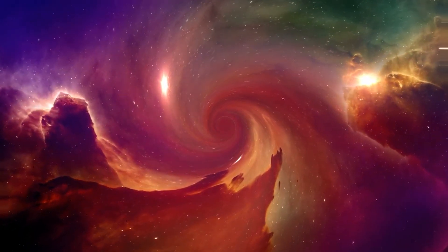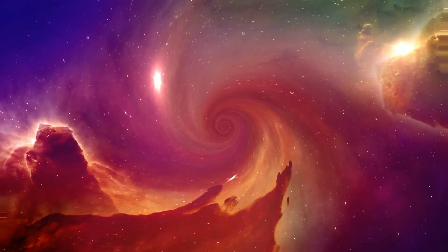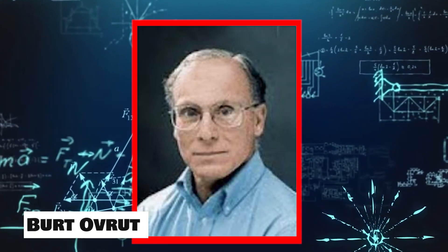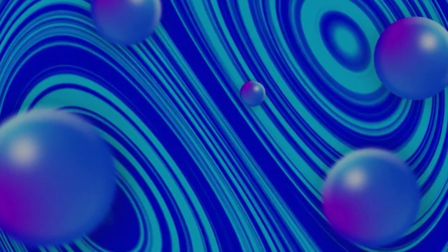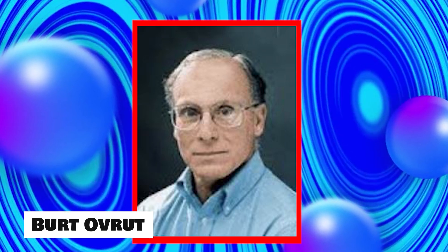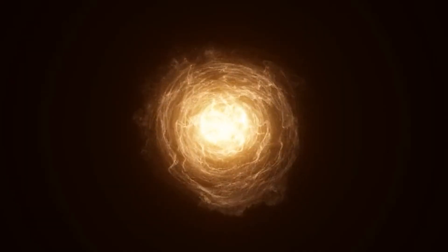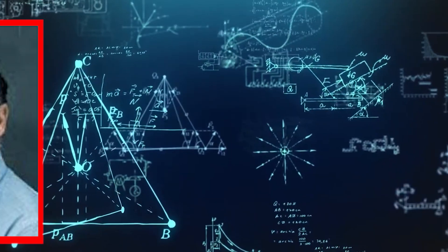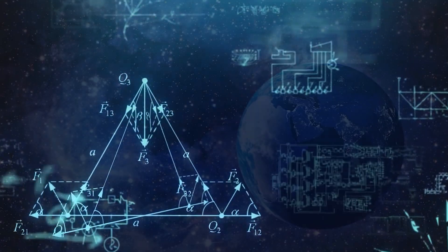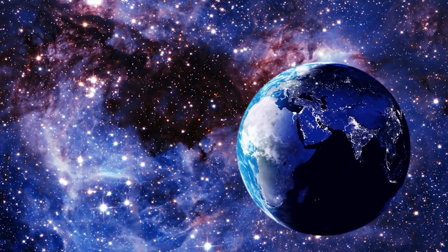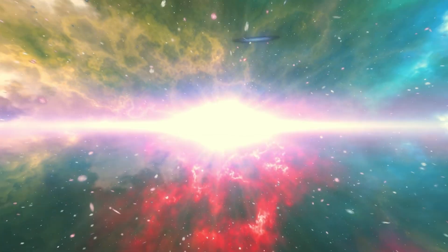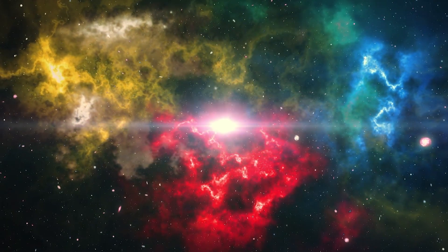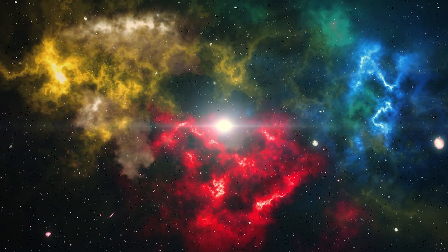The ekpyrotic model helps us understand the actual scenario of the collision. It was presented by physicists Bert Ovrut, Paul Steinhardt, Neil Turok, and Justin Khoury in 2001. The word ekpyrotic means 'coming out of fire.' The model suggests that our universe has no beginning — the collision of two branes led to the Big Bang. It also discusses the Big Bounce concept, which smoothly connects the initial contraction phase to the later expansion phase.